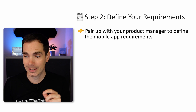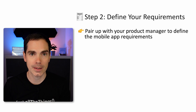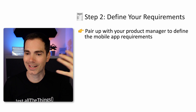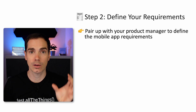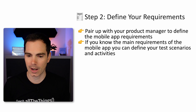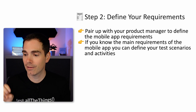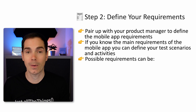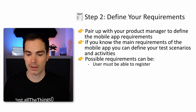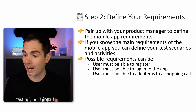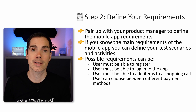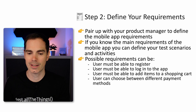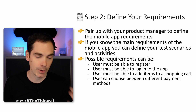Step number two: define your requirements. Pair up with your product manager to define the mobile app requirements. Read the documentation, acceptance criteria, user stories, epics, and the roadmap — everything you can get from product managers helps you as a tester to prepare your testing activities. If you know the main requirements of the mobile app, you can define your test scenarios accordingly. For example: users must be able to register, log in, add items to a shopping cart, or choose payment methods.